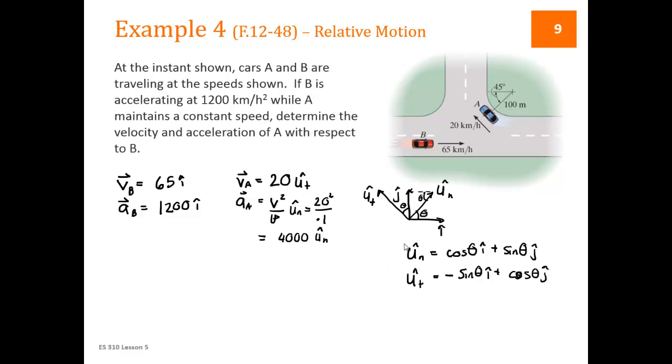So now that we have the relationship between the normal and tangential and the I and J's, we can write our VA and our AA as in I's and J's. So VA is tangential. So that's the bottom one. So VA is going to be 20, negative 20 sine of 45 I hat plus 20 cosine of 45 J hat. AA, so we're going to use the top one here, is 4000 cosine of 45 I hat plus 4000 sine of 45 J hat.